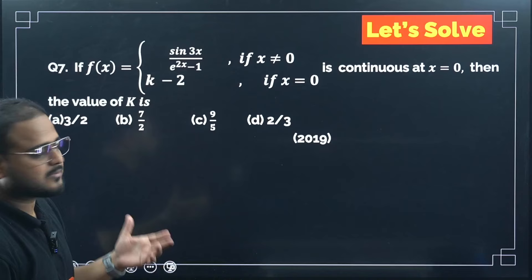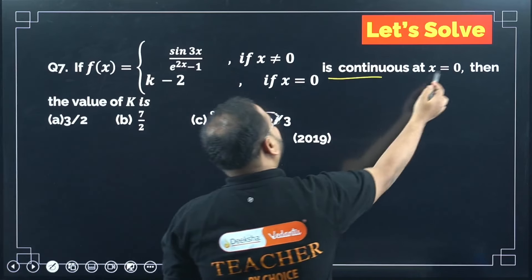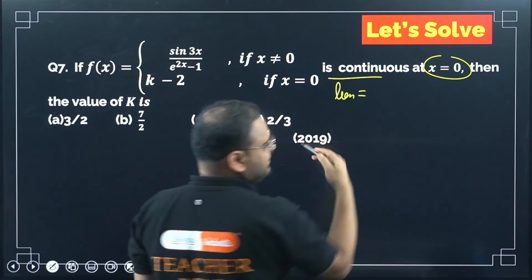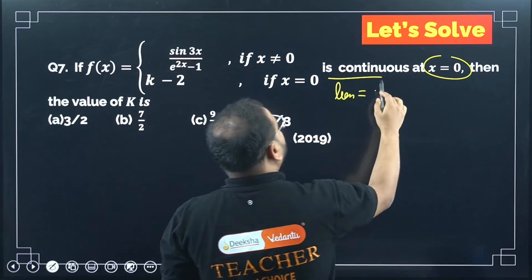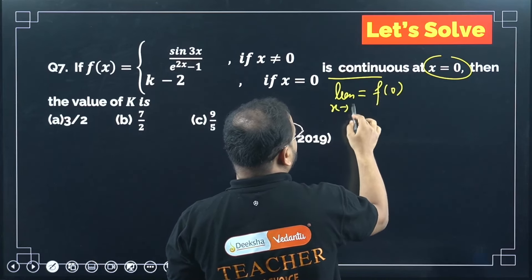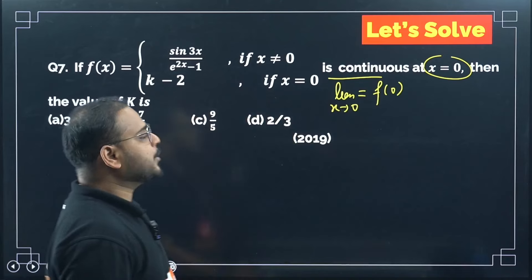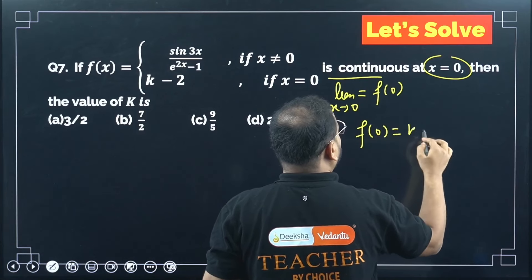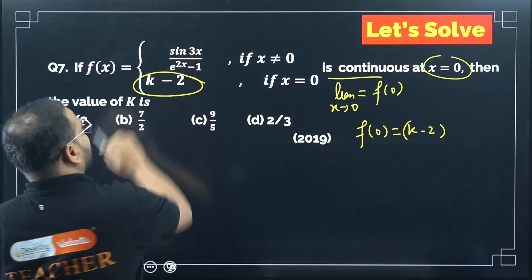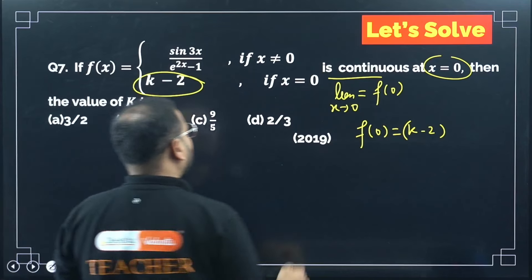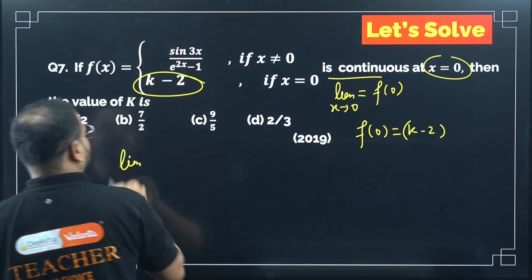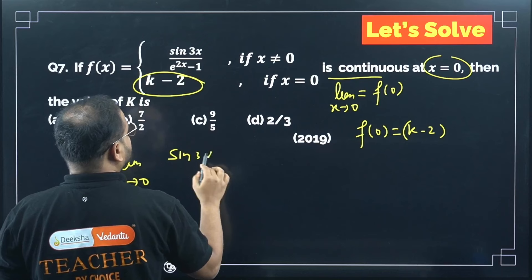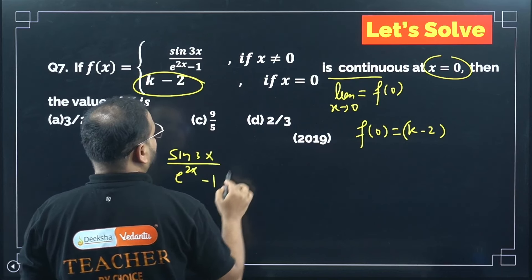Question 7: For continuity, the limit as x→0 must equal f(0) = k−2. The function for x≠0 is sin 3x/(e^(2x)−1). Using standard limits: lim(x→0) sin(ax)/(ax) = 1 and lim(x→0) (e^(ax)−1)/(ax) = 1. This question is from 2019 and similar continuity questions repeat every year.